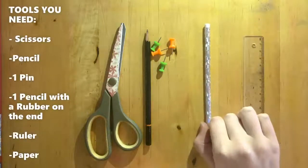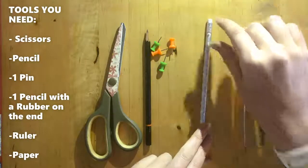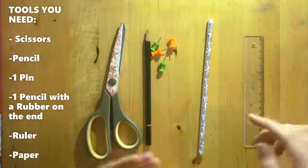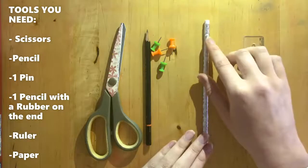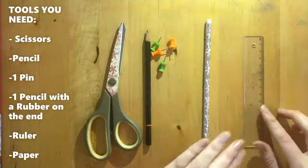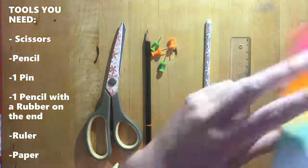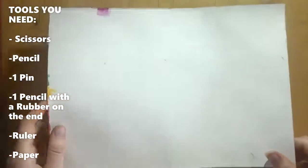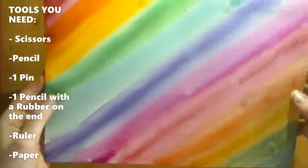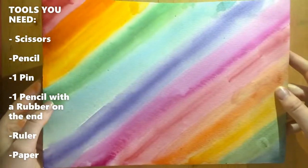Next you're going to need a pencil with a rubber on the end. Doesn't matter if it's old, new, just a pencil with a rubber on the end. That's important. And a ruler to draw out your lines. And of course, your piece of paper. And I have painted on mine. So, onto the next bit.